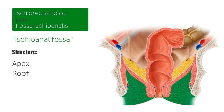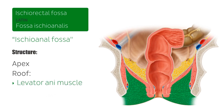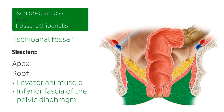The roof of one of the ischiorectal fossae is formed by the obliquely coursing levator ani muscle and the inferior fascia of the pelvic diaphragm, which we can see in this image. The levator ani muscle is just here, creating the roof, and this line coursing just beneath the levator ani could be considered the inferior fascia of the pelvic diaphragm.